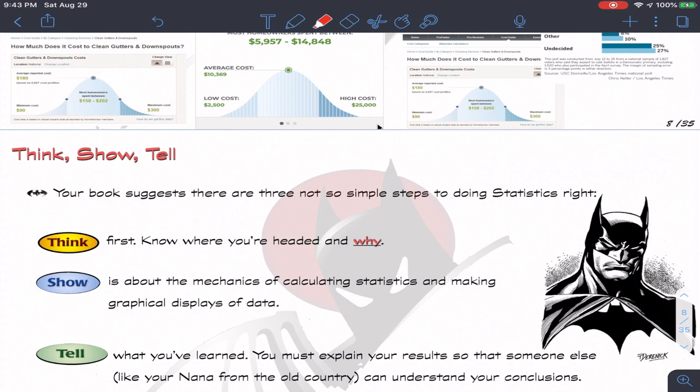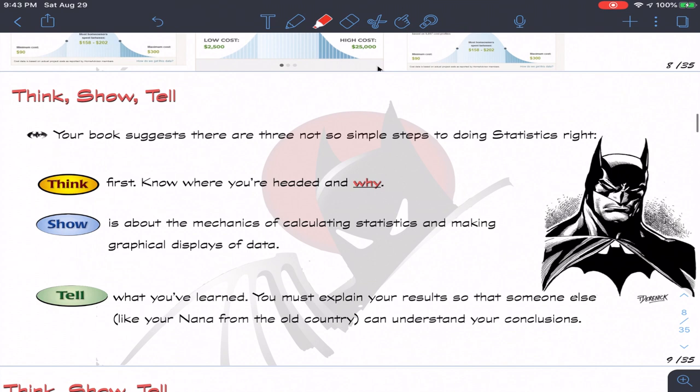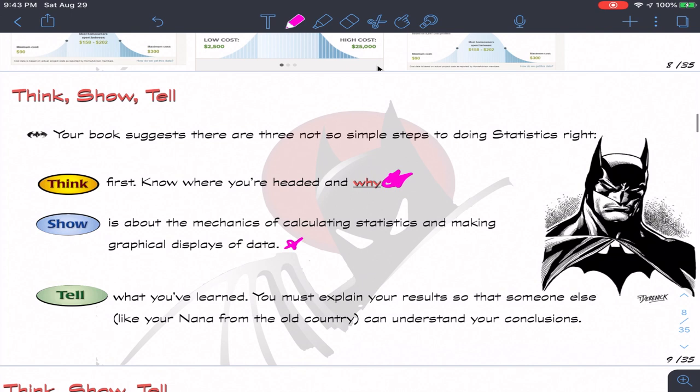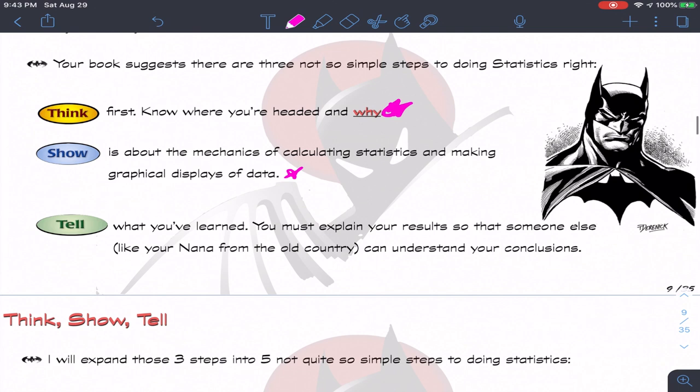So the last little bit for this video. Your book likes to go through the model of think, show, and tell. And your book suggests there are three not-so-simple steps to doing statistics right. The first is think first and know where you're headed and especially why. Then, show is about the mechanics of doing the calculating statistics and making graphical displays of data. We'll get into that idea of showing what you're seeing and then using words to describe it. And then the last bit is tell. Tell us what you learned. You must, and I say must, explain your results so that someone else can understand your conclusions.